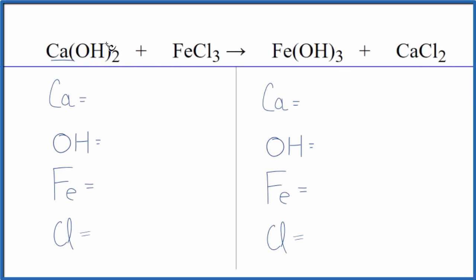In this equation we have calcium hydroxide plus iron three chloride. To balance the equation, let's first count all the atoms. We have one calcium atom, and we're going to call the hydroxide here just one item.